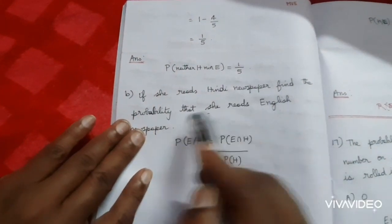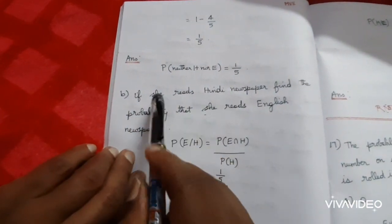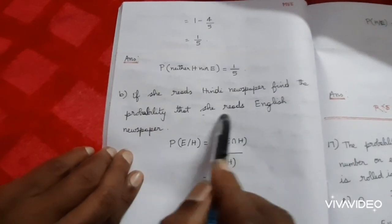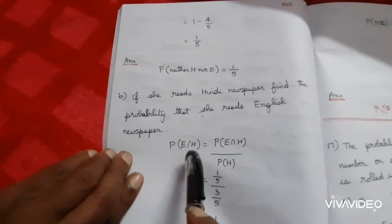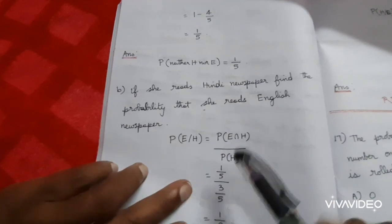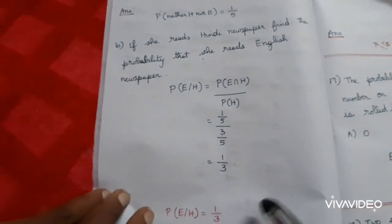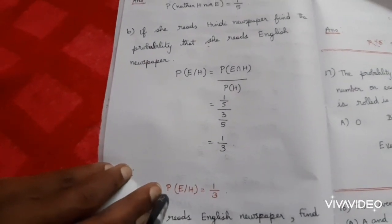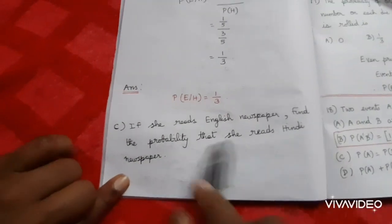Part B: If she reads Hindi newspaper, find the probability that she also reads English newspaper. Given that Hindi is already known to have happened, find P(E|H). Using the formula P(E|H) equals P(E intersection H) divided by P(H). Substitute 1/5 divided by 3/5, which equals 1/3. So the probability that she reads English given she reads Hindi is 1/3.